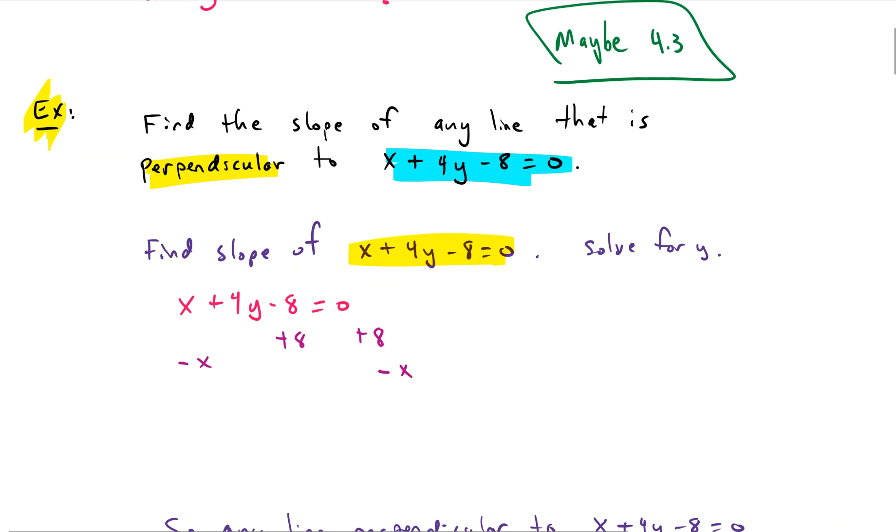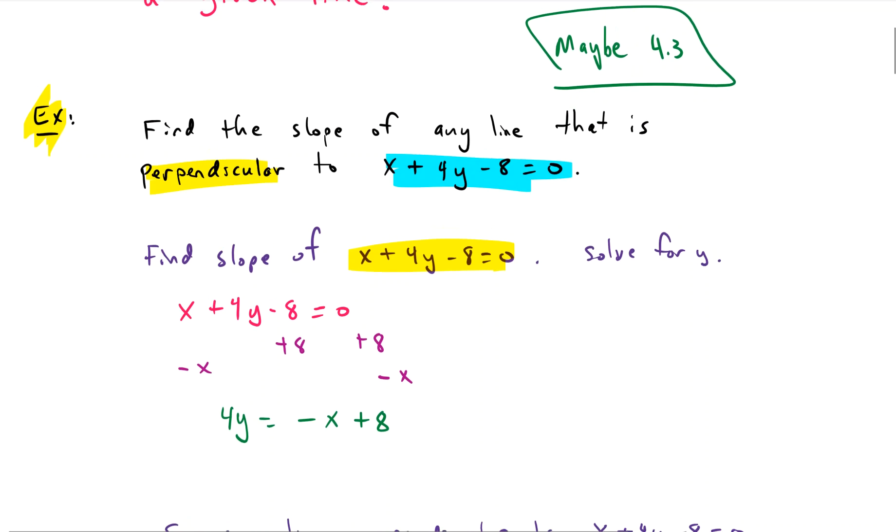And that leaves us with 4y equals negative x plus 8. And I need a little more space here.